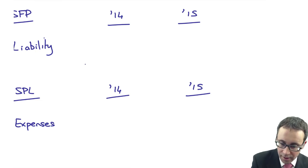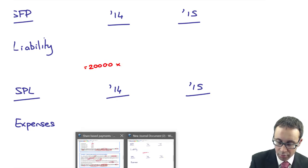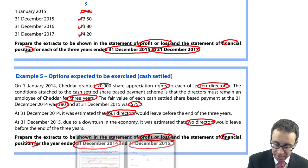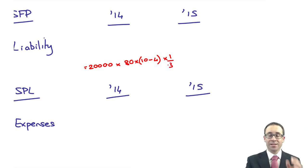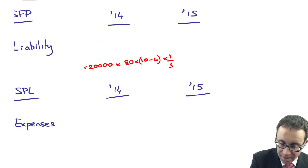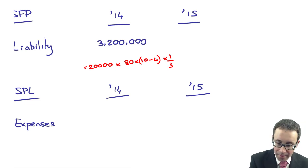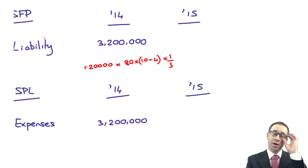If memory serves me right, 20,000 share appreciation rights, $80 was the fair value. We started off with 10, we expect four to leave, so we expect it to be six at the end of the three year period. So 20,000 times 80 times by six divided by three is 3.2 million dollars. Again, not very exciting in year one because it is the same figure that is the expense, as we've started the scheme from zero. We've gone from zero to 3.2 million.